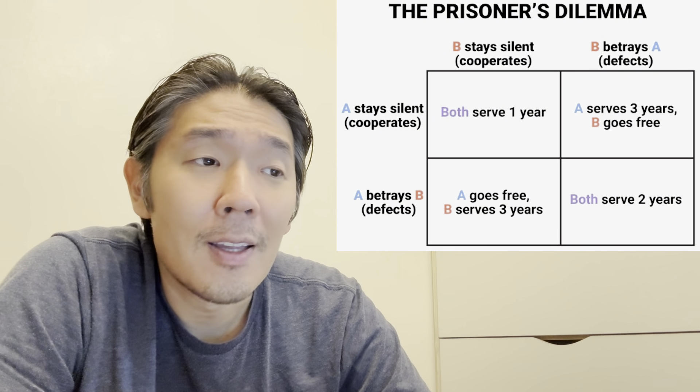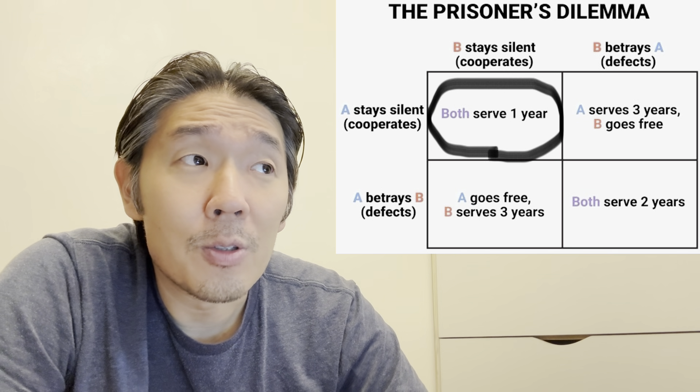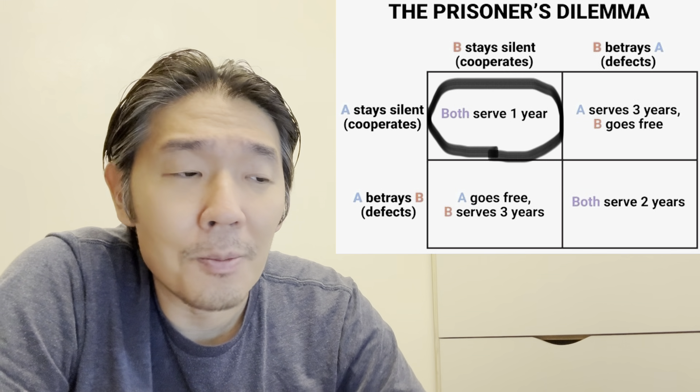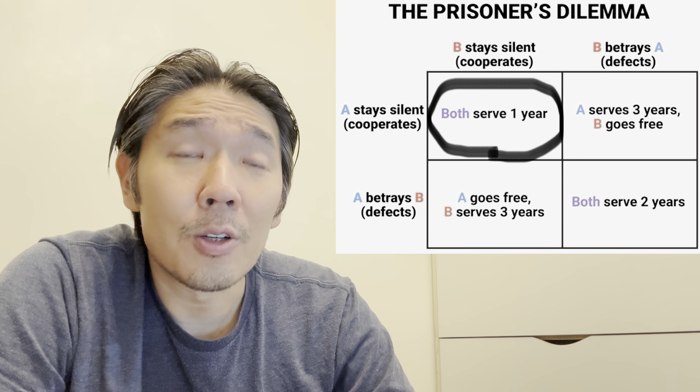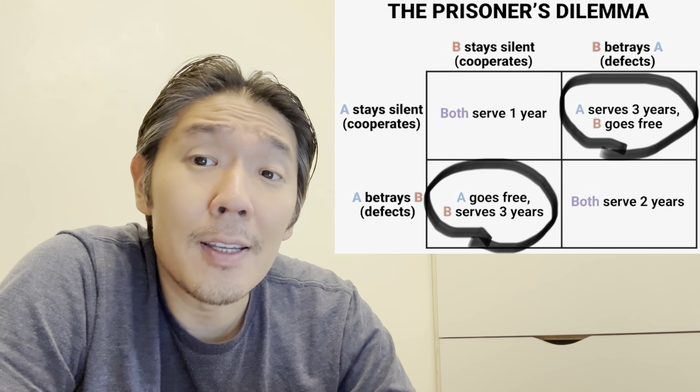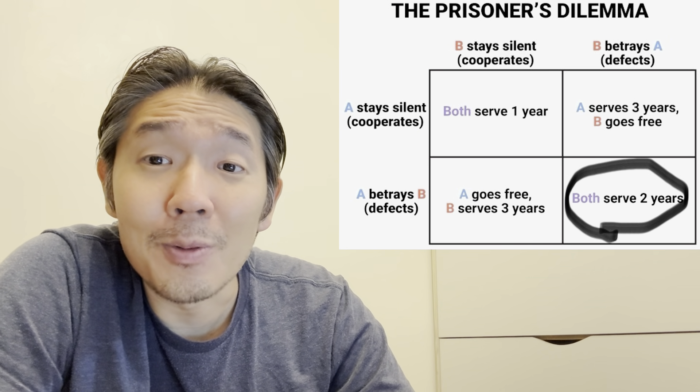They offer both criminals the same deal: if you snitch on the other guy and confess to robbing that bank, they get three years prison time and you get zero. If they both snitch on each other, they both get two years. There are four potential outcomes: if they both don't snitch, they both serve one year for the ATM break-in — that's the best case scenario. The other scenarios involve one or both criminals snitching.